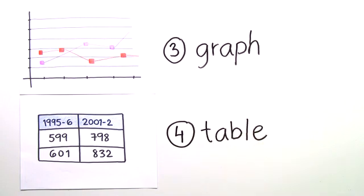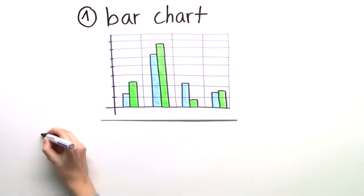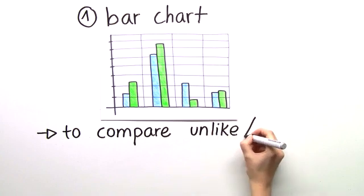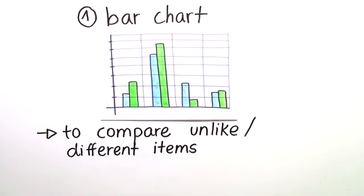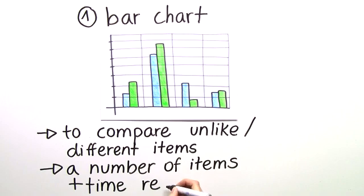We'll go through each one in detail so you'll get to know all the vocabulary you need. We'll start with the bar chart. This visual aid is used to compare unlike or different items. Typically you have a number of items, for example fruits, and you also have two or more time references, for example two different months or years.